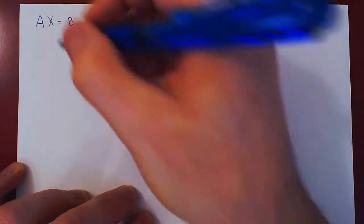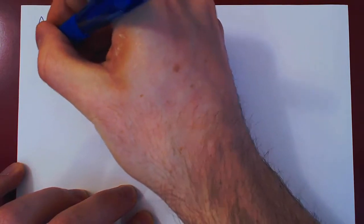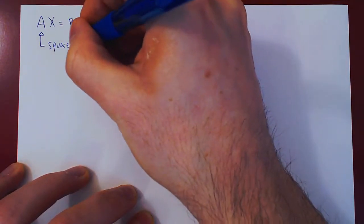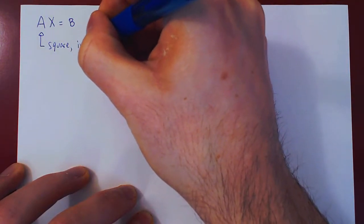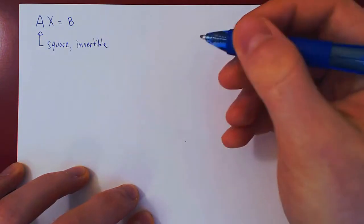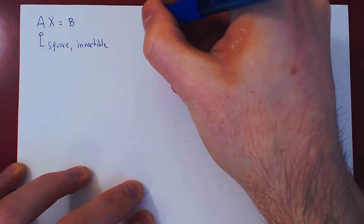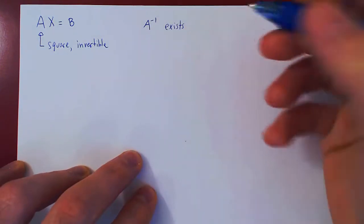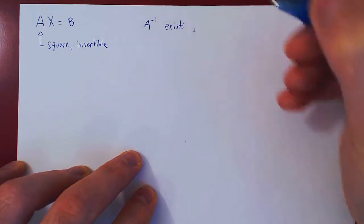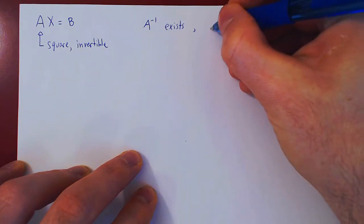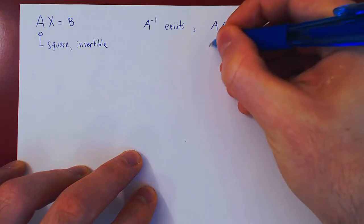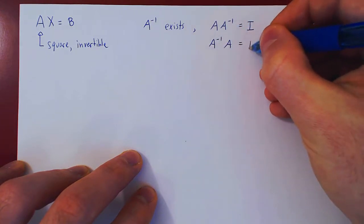Now, let's assume for a second that the matrix of coefficients A is square and that it is also invertible, so A inverse exists. If you remember, the property of A inverse is that it cancels A via multiplication, so A times A inverse equals I, but also A inverse times A equals I.